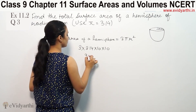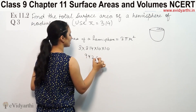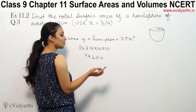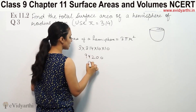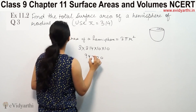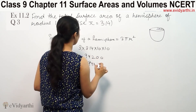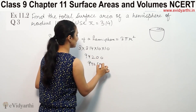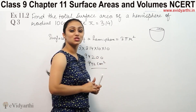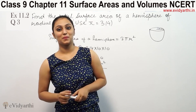That gives us 942. We place the decimal point, giving us 942.00, which we round to 9.42 — in centimeters squared. Area is expressed in square units, so the answer is in centimeters squared.